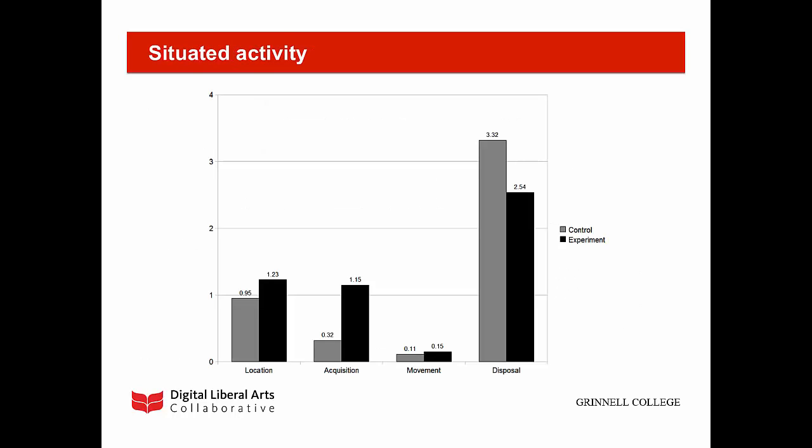When I coded these narratives and ran an analysis on them, I found that students who played the game were more likely to use verbs describing how objects were located, picked up, and moved to the appropriate receptacle. In the case of acquiring objects, the difference between the control and experiment group was statistically significant, which is not surprising considering that the main activity in the game was picking up bottles and trash. Students who did not play the game focused almost exclusively on the last step: disposing bottles and trash.